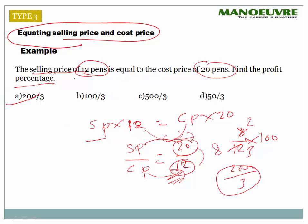Alternatively, when the person sells 12 pens he is getting the cost of 20 pens, which means 8 extra pens worth of profit — that is the idea behind it.